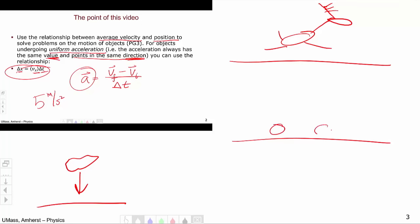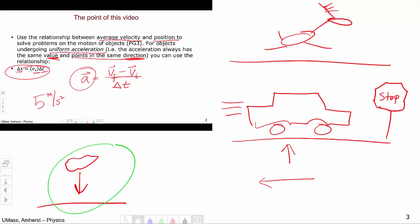Or you can imagine a car that's going along but slowing down for a stop sign. We'll see that this also can be modeled with uniform acceleration, with an acceleration pointing backwards in the direction of motion of the car. So all three of these scenarios can be modeled with uniform acceleration. So it's not just some theoretical construct that we're thinking about.